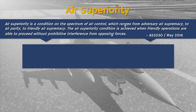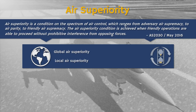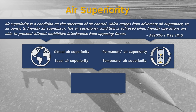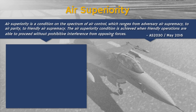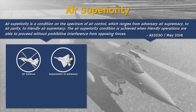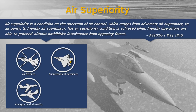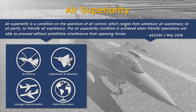When talking about air superiority, it's also important to break down the concept into the operational context. The focus on local air superiority in the document is clear by referring to the anti-access area denial strategies — A2AD in short — followed by potential adversaries. To gain air superiority, you will need a set of complementary capabilities. These are friendly air defense, suppression of enemy air defense, strategic and tactical mobility, and global strike assets.